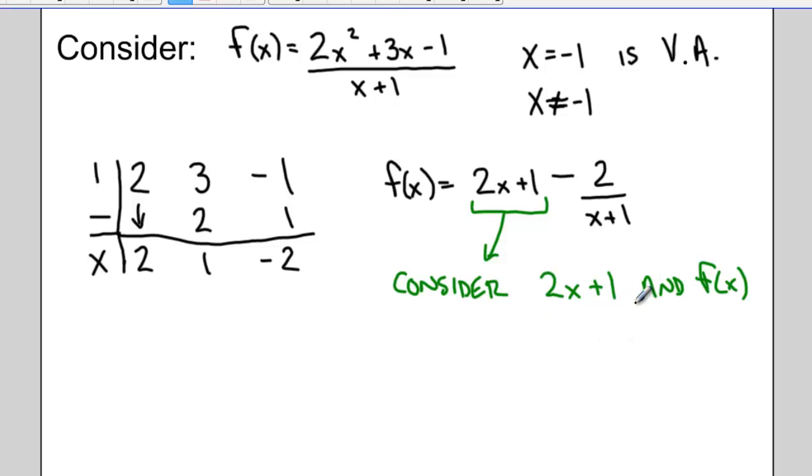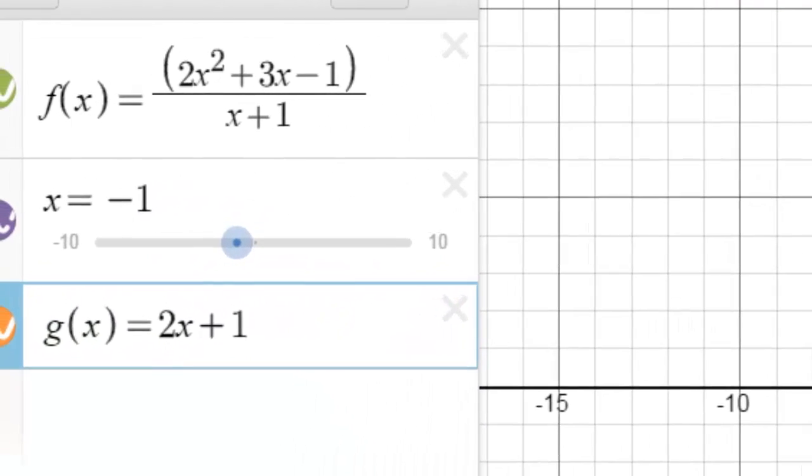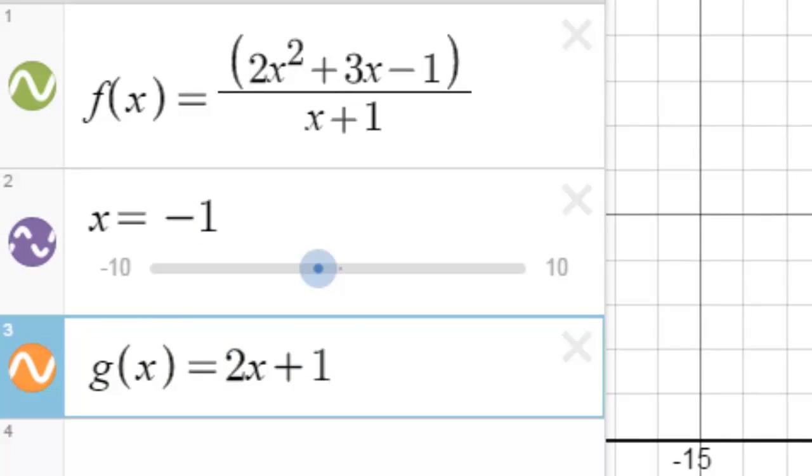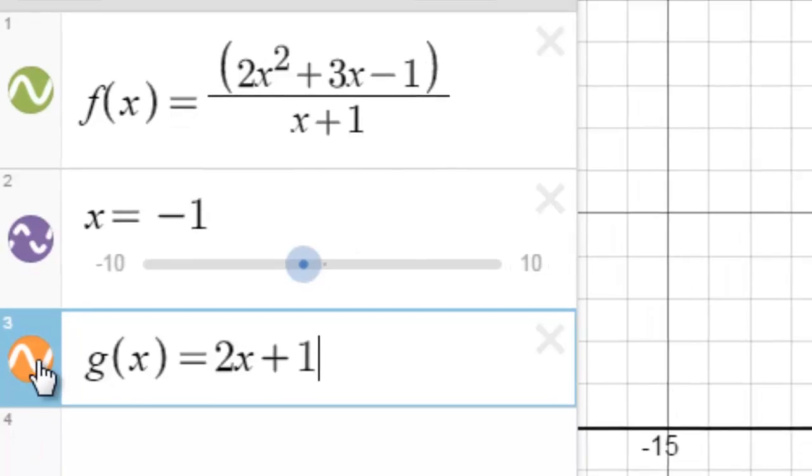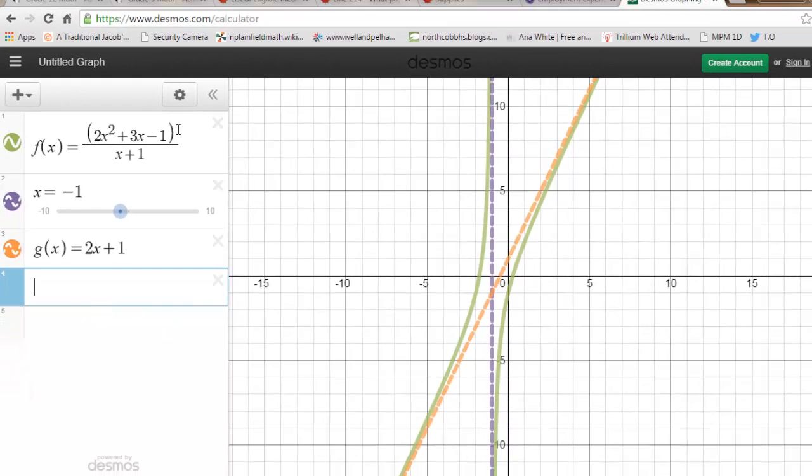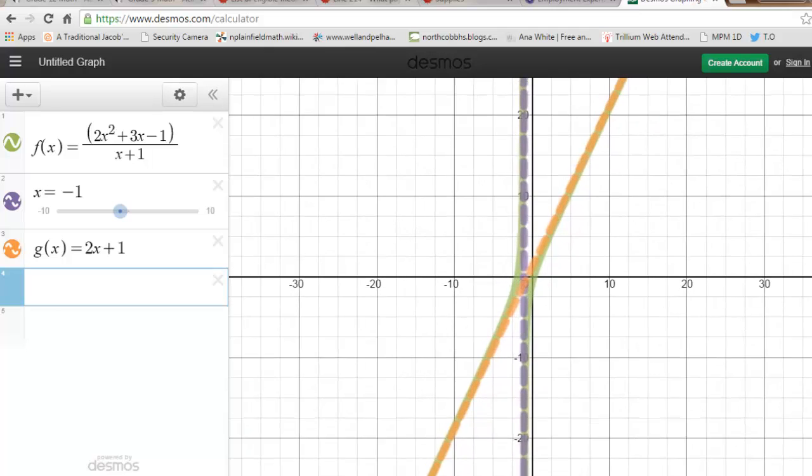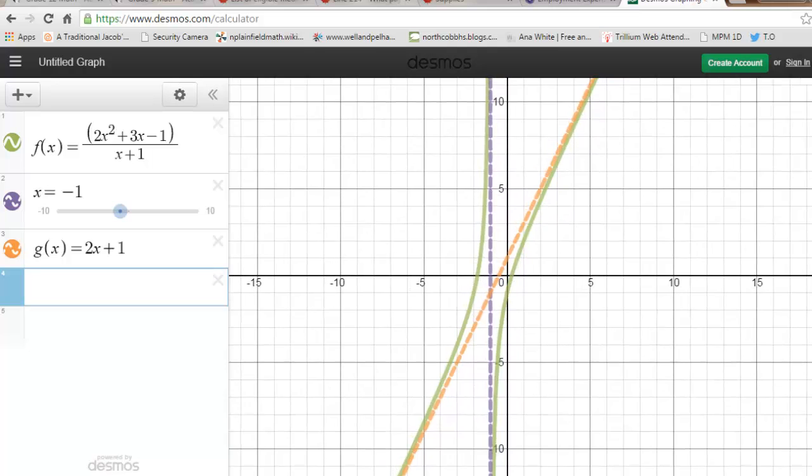And let's consider that part of the function in relation to f of x. What happens if we graph the function in Desmos, 2x plus 1, that linear function? So all of a sudden when I look at my original function f of x, which is in green, and my linear function 2x plus 1, what I divided out and got, I can see that the green function really looks like it's approaching that linear function.